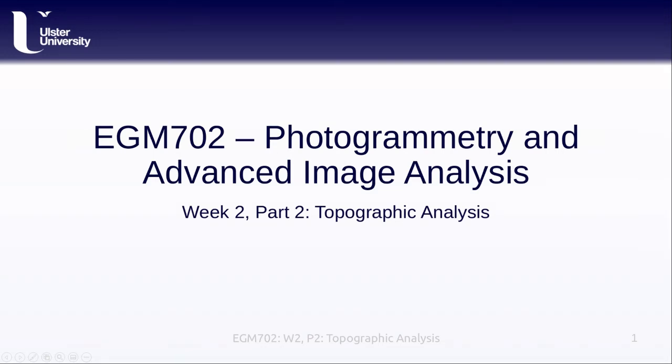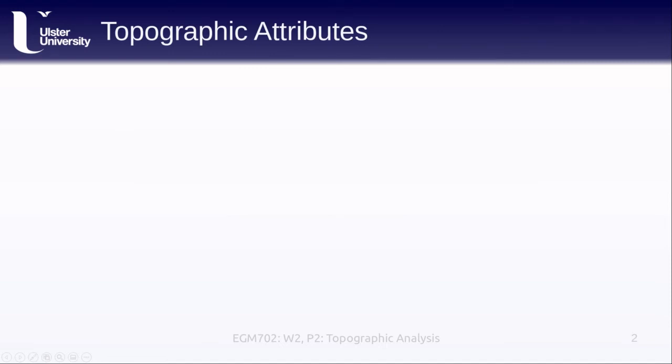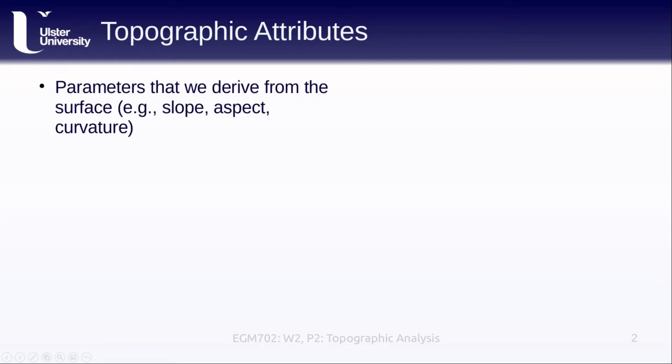Hello and welcome to EGM 702 Photogrammetry and Advanced Image Analysis, this is week 2 part 2: Topographic Analysis. One of the things that we can do with the DEM is derive topographic attributes. These are the parameters that we can derive from the surface, for example the slope or the aspect, the curvature, or even something called hypsometry which is just the distribution of area as a function of altitude.